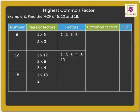The pairs of factors of number 18 are: 1 × 18 = 18, 2 × 9 = 18, and 3 × 6 = 18. Thus the factors of 18 are 1, 2, 3, 6, 9, and 18.